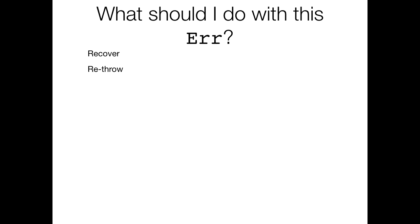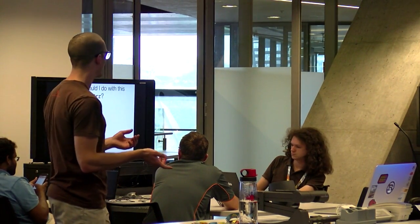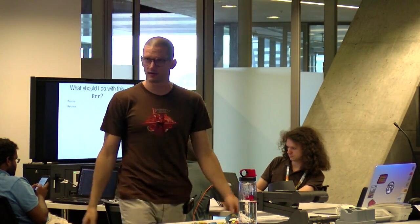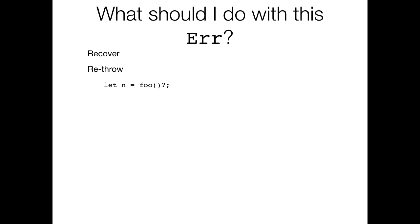Option number two is to just re-throw. We've seen that's what the question mark operator is for — in this particular function I don't know how to recover from this error. Option number three is that you can panic. A panic is a controlled crash in Rust — it crashes the current thread, but it does so cleanly by unwinding the stack so destructors will get called. This isn't a segfault, it's not exploitable, and you can actually catch this panic at thread boundaries. It doesn't necessarily have to crash your entire process. You can explicitly cause a panic using the panic! macro, but it's much more common to use the unwrap or expect functions on Option or Result, which will panic if it's not Ok.